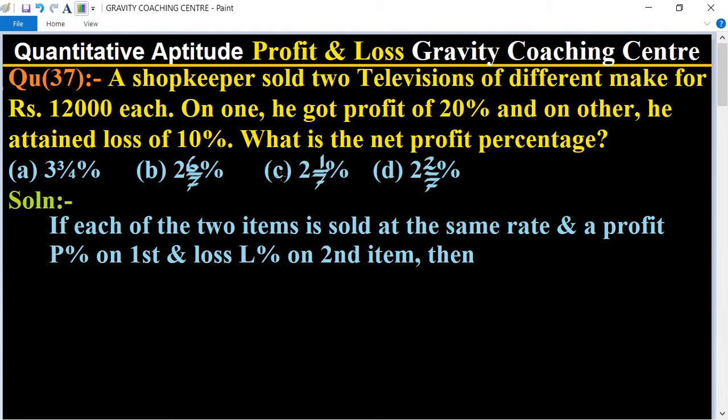What is the net profit percentage? We will find the solution by shortcut trick. The trick is: if each of the two items is sold at the same rate and profit P% on first